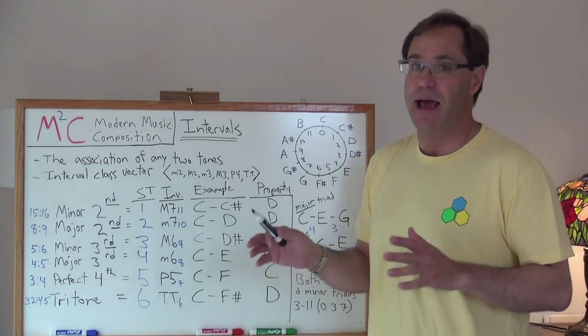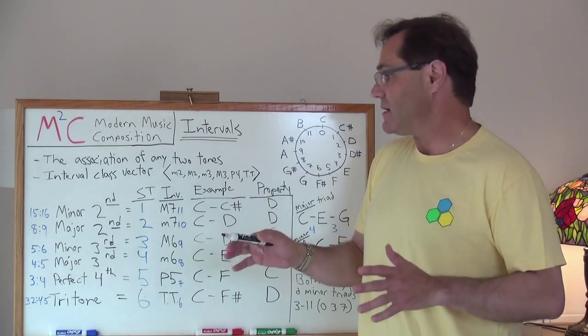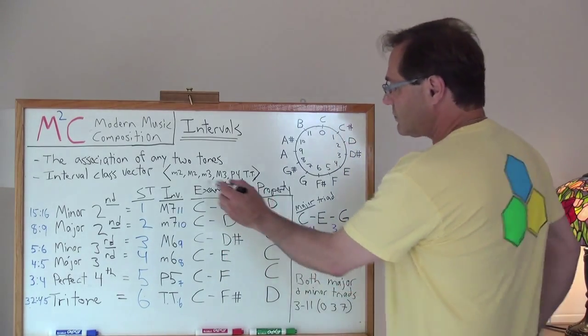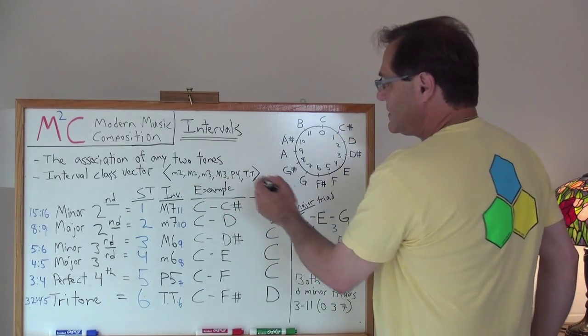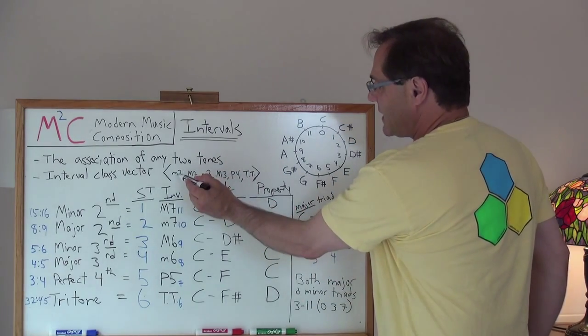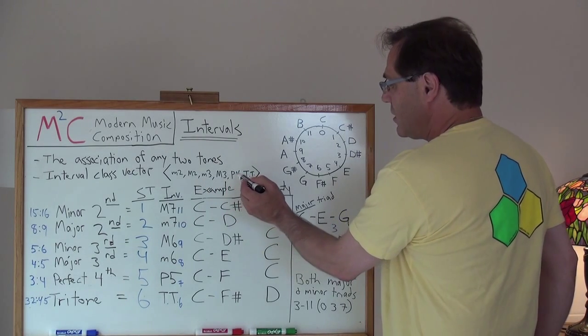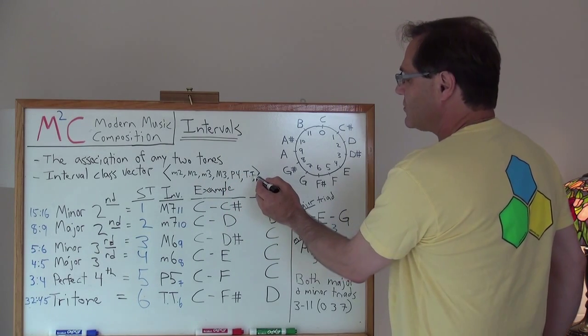Every set class has an interval class vector, and what that is is it comprises of six pieces: minor second, major second, minor third, major third, perfect fourth, and the tritone.